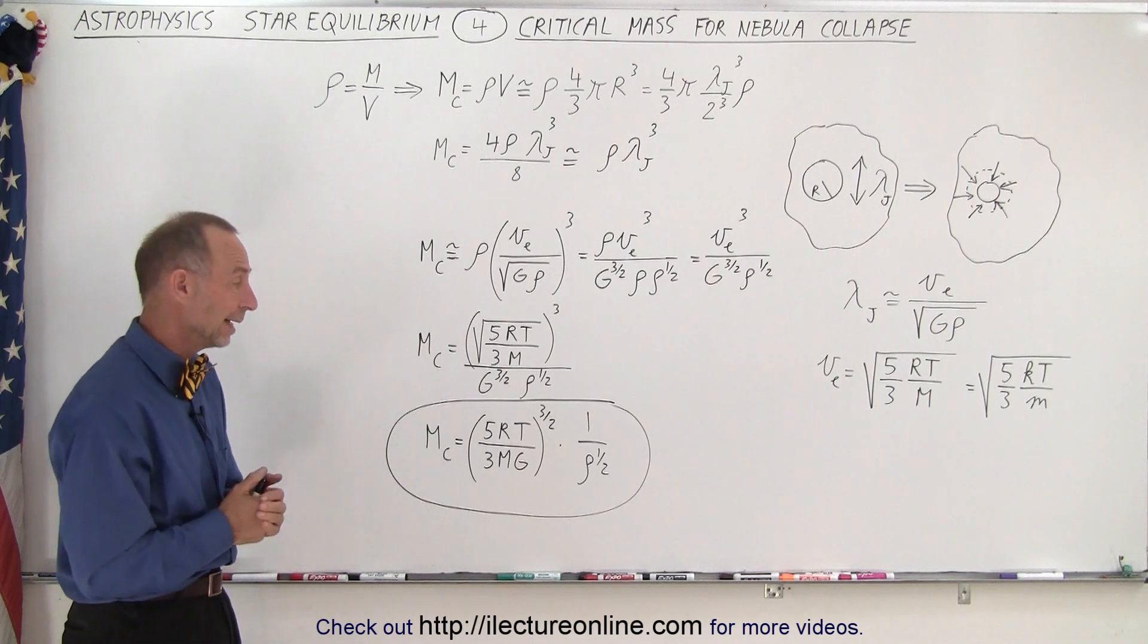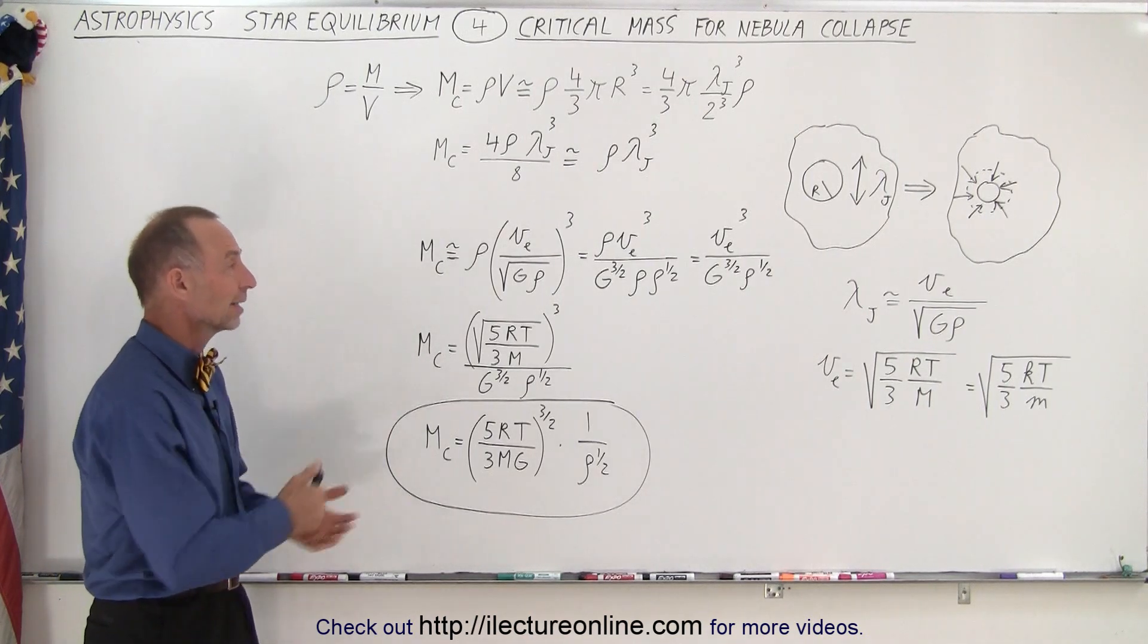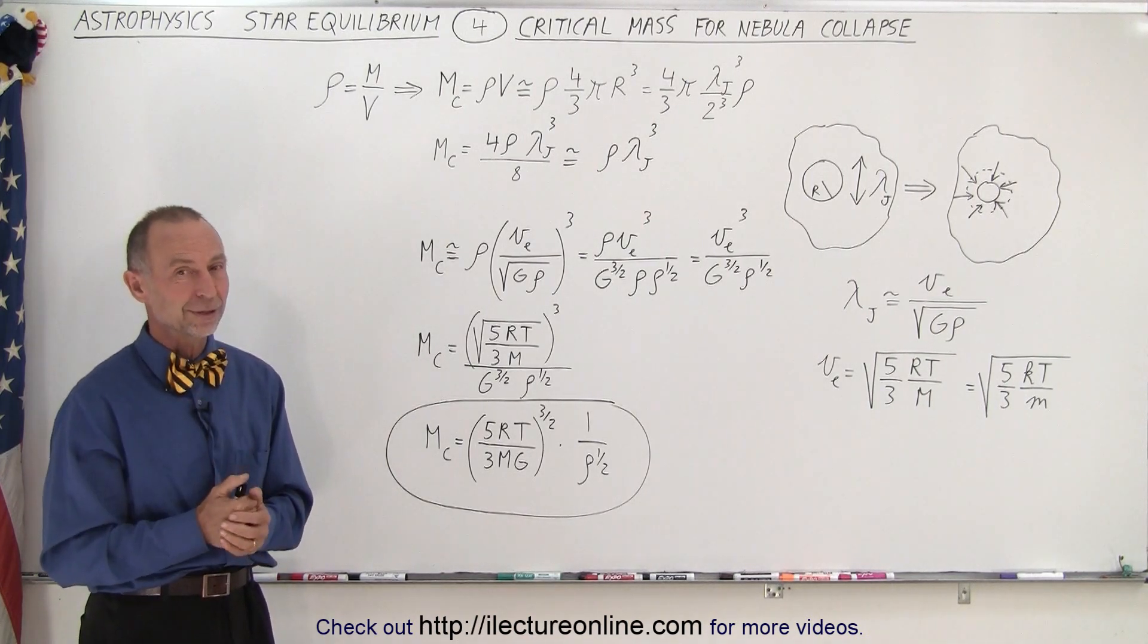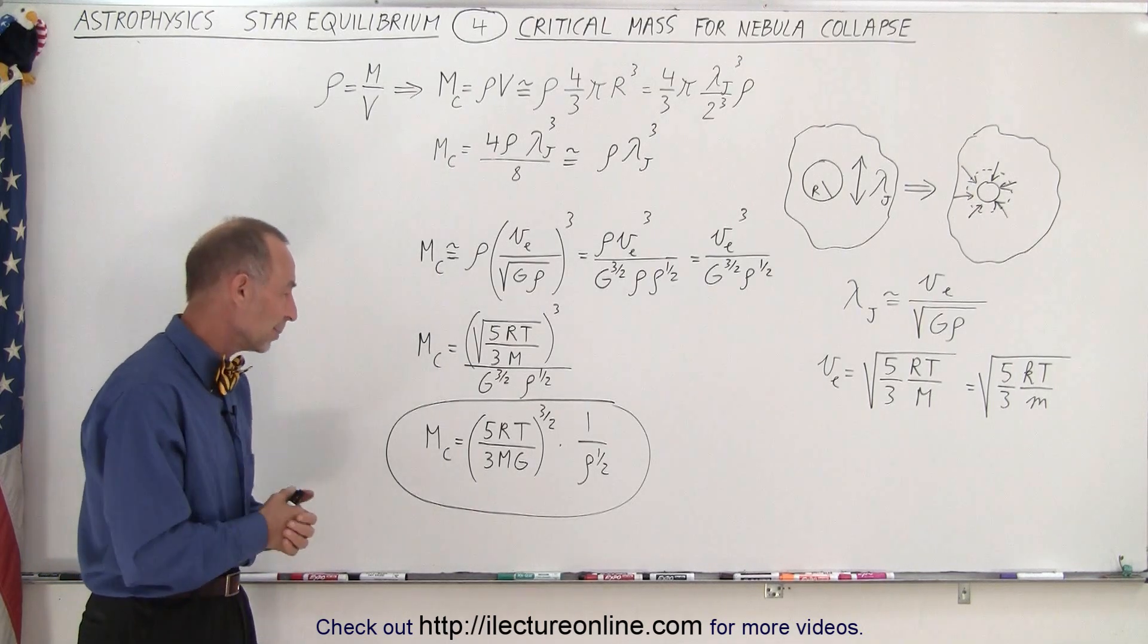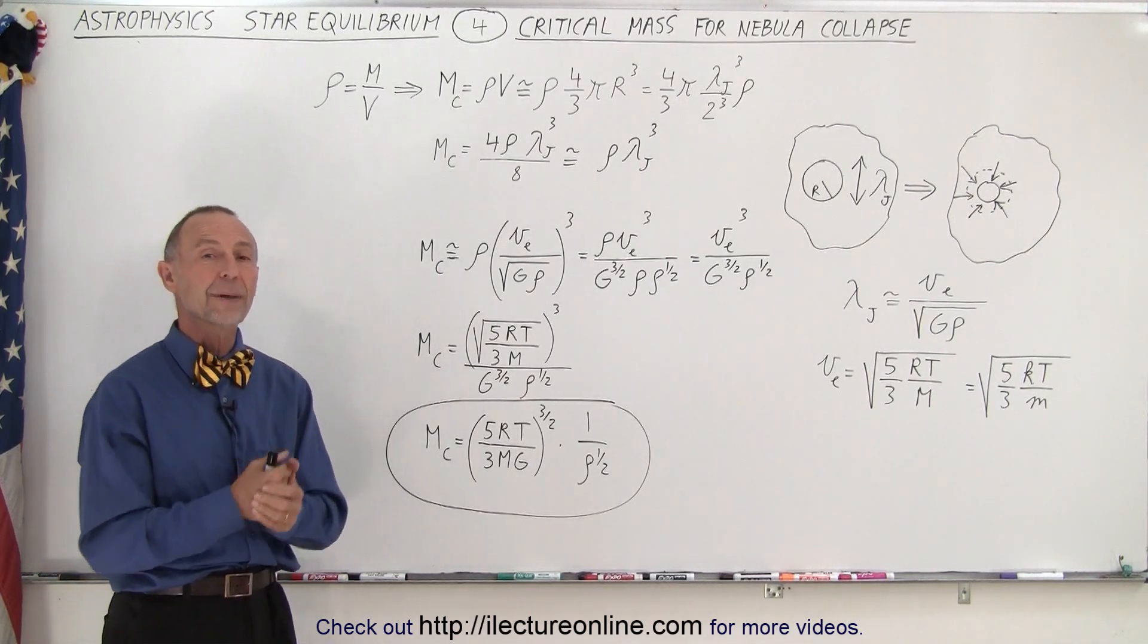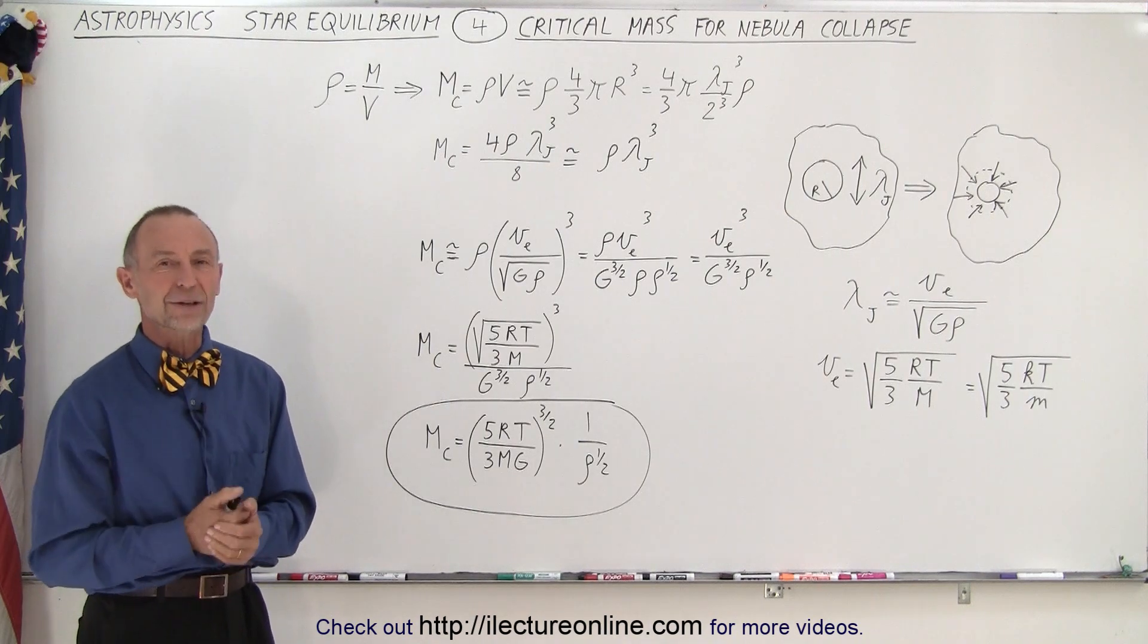So now I guess we need to go look at a numerical example to see how that actually works. So stay tuned and we'll now show you how to calculate either the minimum Jeans length or the minimum critical mass required for gravitational collapse.